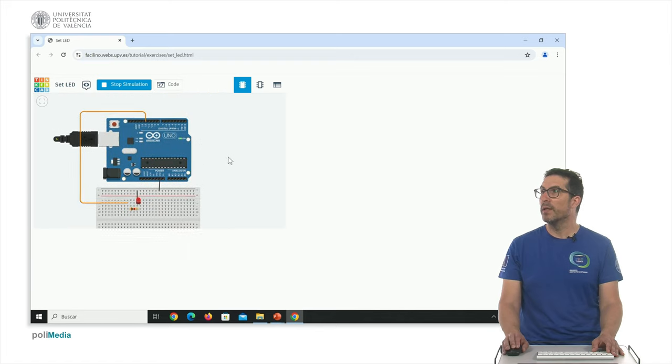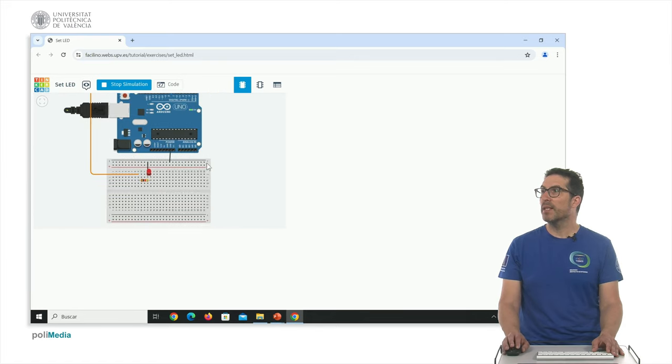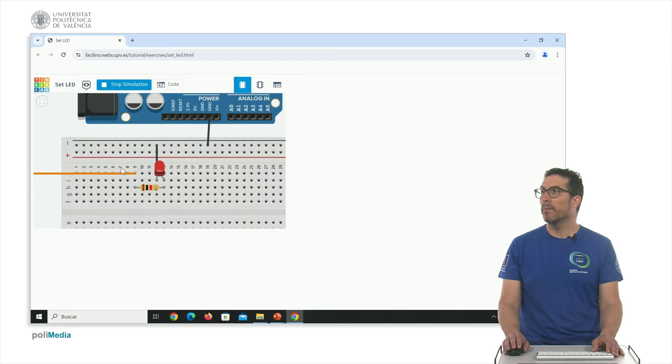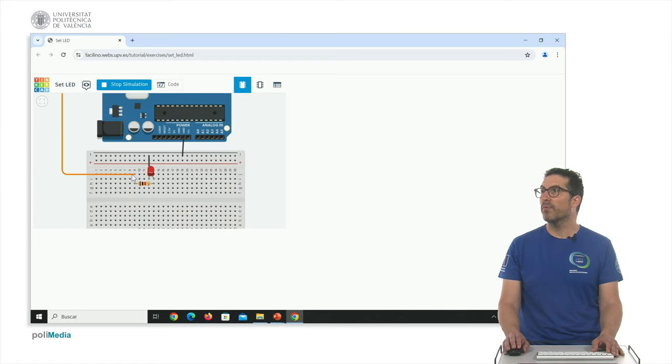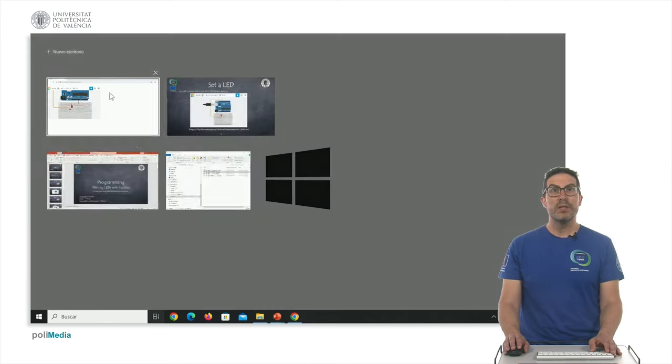Because when we execute the instruction, we put here five volts that will go through the resistor and then drive enough current to the LED so it gets ON.